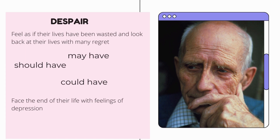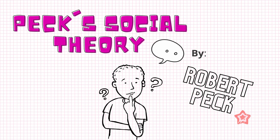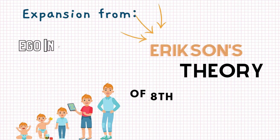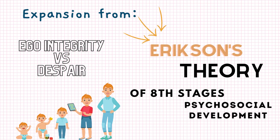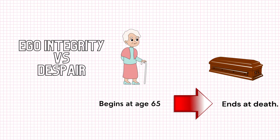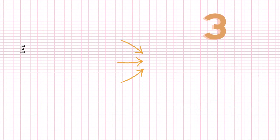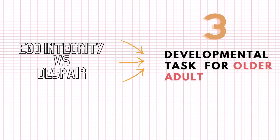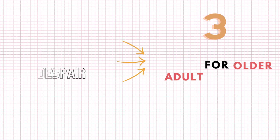They face the end of their life with feelings of depression. Now let's look into Peck's social theory of aging, developed by Robert Peck. This theory is an expansion of Erikson's eighth stage of psychosocial development — ego integrity versus despair — which begins at age 65 and ends at death. Peck has divided this stage into three developmental tasks for older adults.